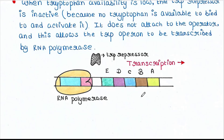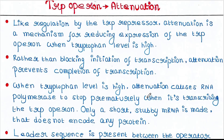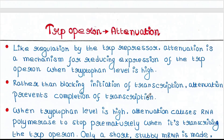We know that tryptophan is an amino acid required to construct proteins. But apart from the repressor mechanism, one more regulation exists: attenuation. We will talk about it in today's lecture.